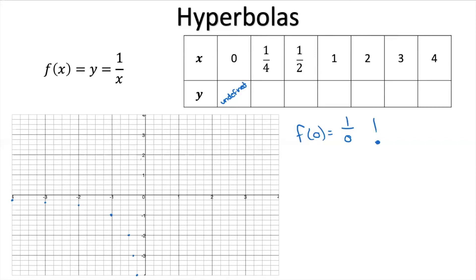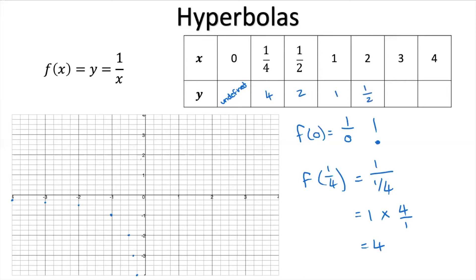Let's try f(1/4). Remembering to tip and times, this gives a value of 4. Similarly, f(1/2) gives 2, f(1) gives 1, f(2) gives 1/2, f(3) gives 1/3, and f(4) gives 1/4.